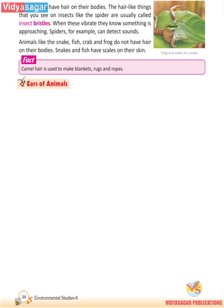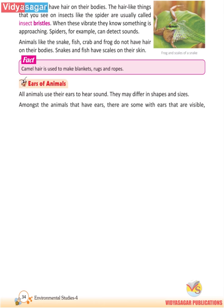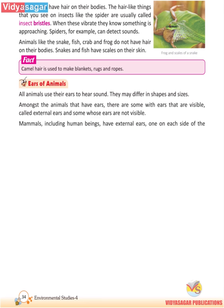Ears of Animals. All animals use their ears to hear sound. They may differ in shapes and sizes. Amongst the animals that have ears, there are some with ears that are visible, called external ears, and some whose ears are not visible. Mammals, including human beings, have external ears, one on each side of the head.